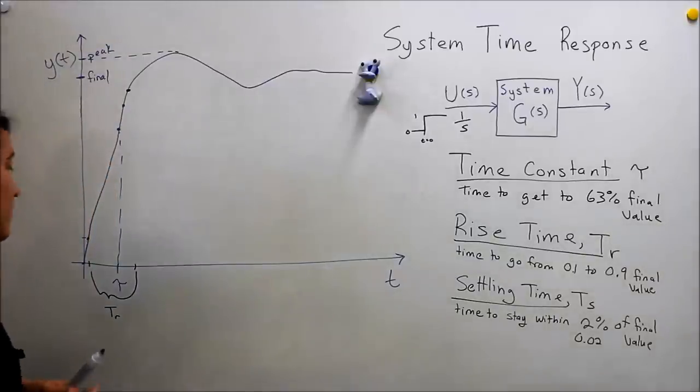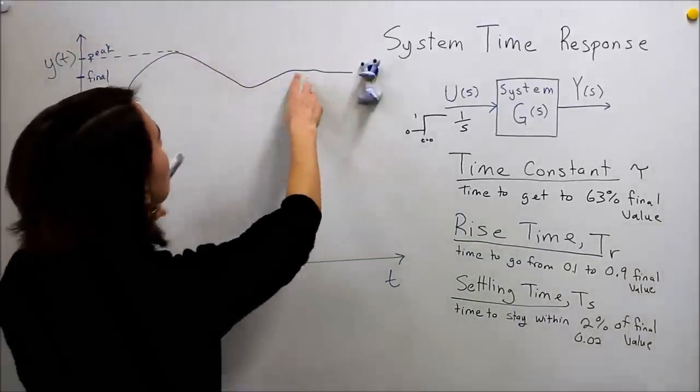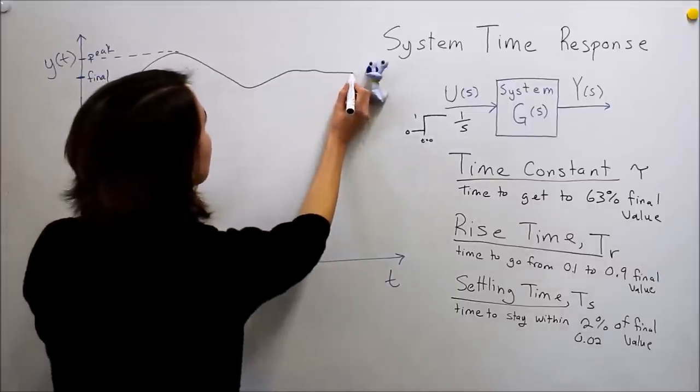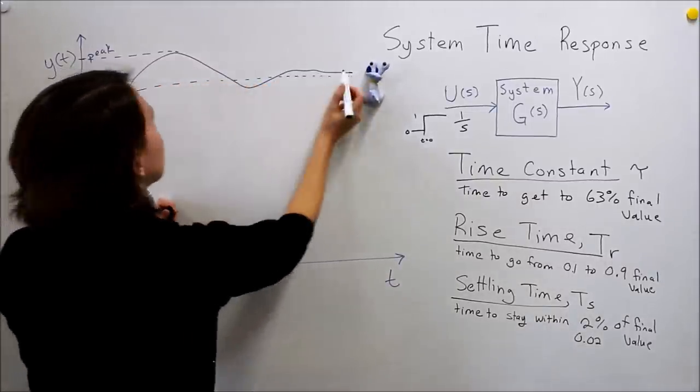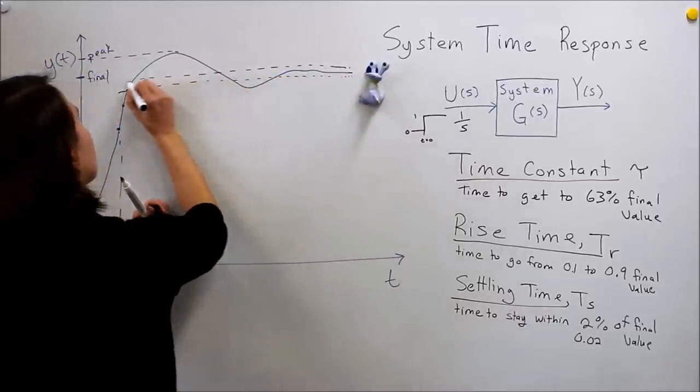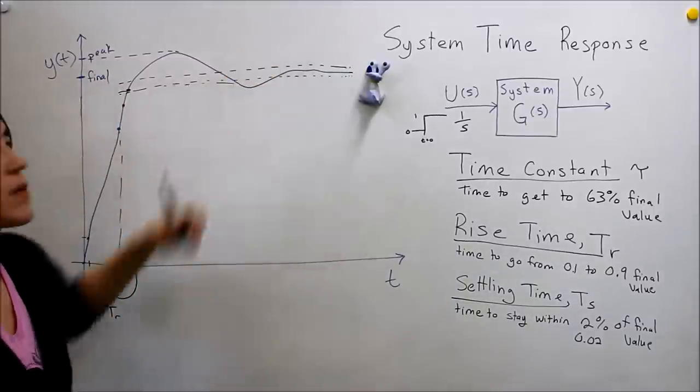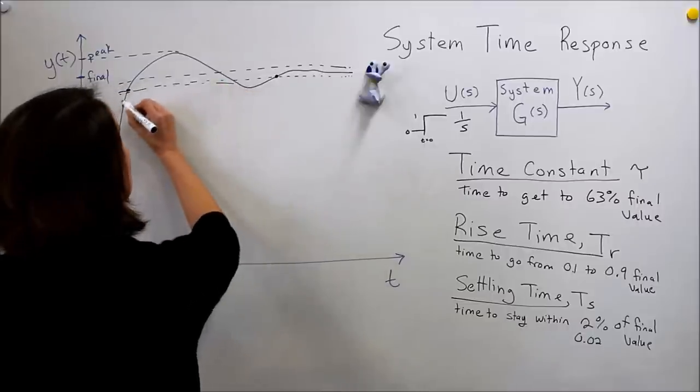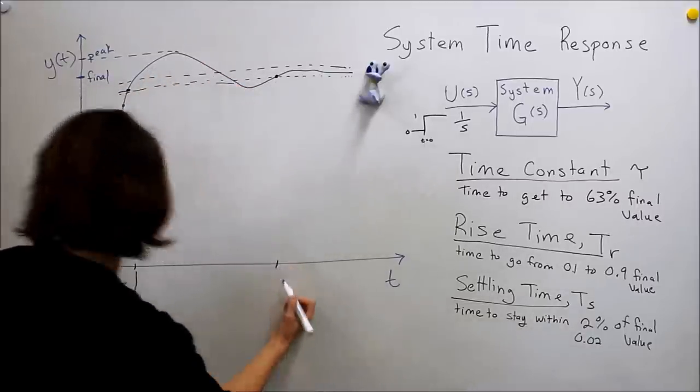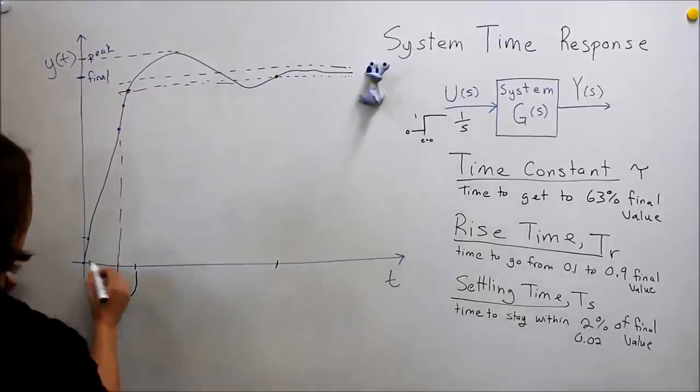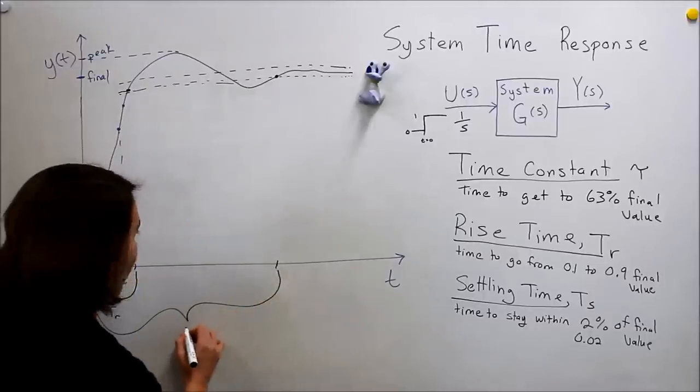And our last thing is our settling time. So we see that it overshoots a little bit, goes back down, and then it gets to about 2% of our value. So this is our final value. We can kind of estimate plus or minus 2% here. So we see that it finally reaches within that 2% at this point. So before we go overshoot, pass it, and then come back. So this would approximately be from here, so from the beginning all the way here. This would be our settling time.